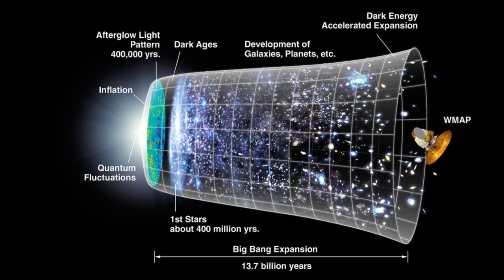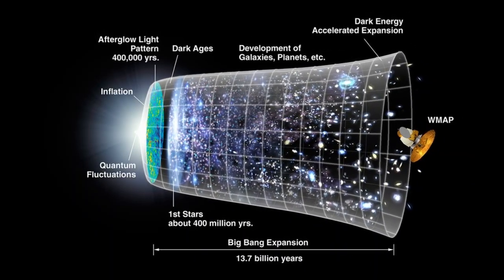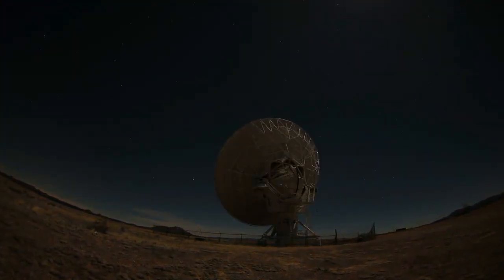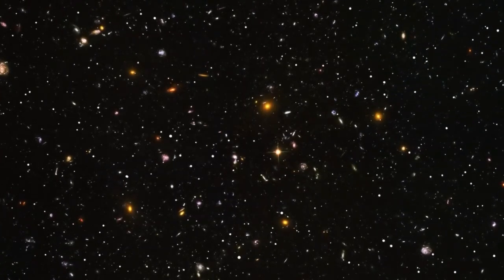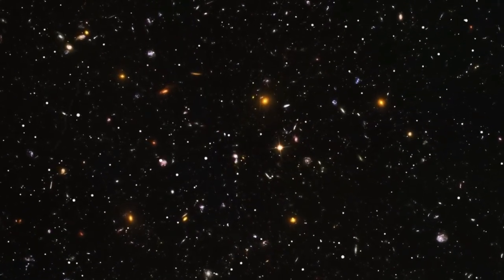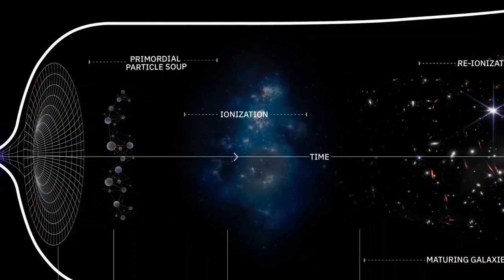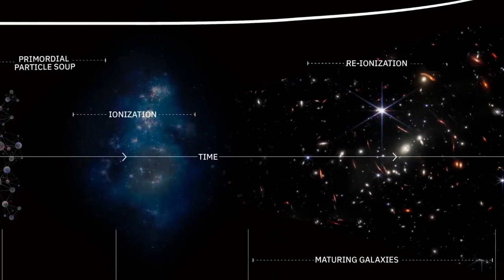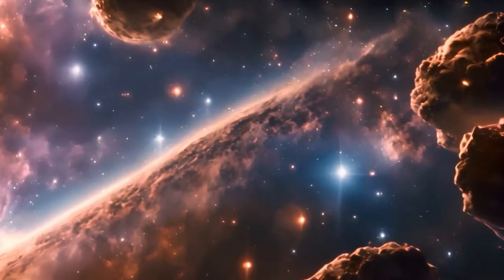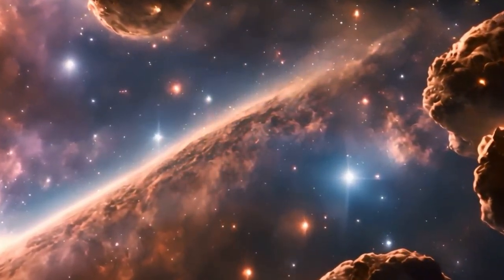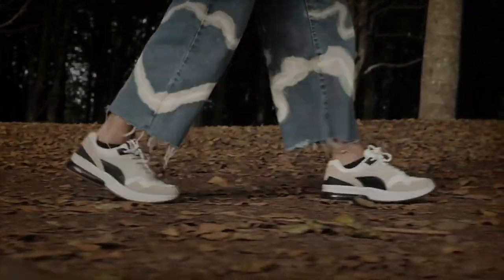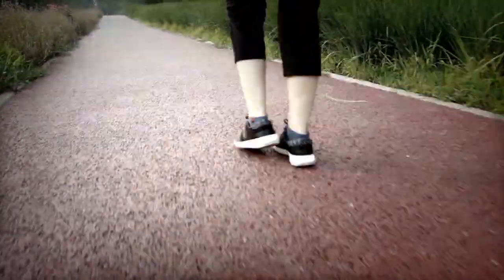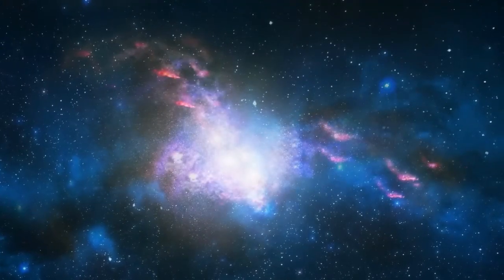While the standard Lambda CDM model treats the universe as a smooth, homogeneous soup, Timescape acknowledges what we can see through our telescopes. The universe is lumpy. Matter clusters into galaxies and galaxy clusters, with vast, empty regions, cosmic voids stretching between them. This uneven distribution fundamentally changes how space-time behaves throughout the cosmos. Like walking on rocky, uneven terrain versus a smooth, paved road affects your journey.